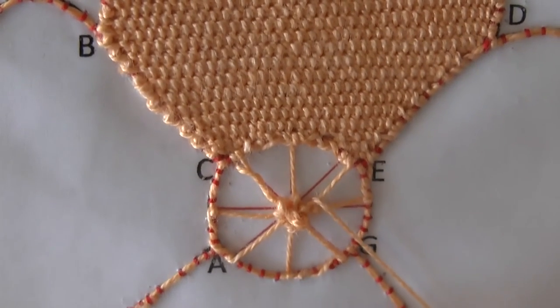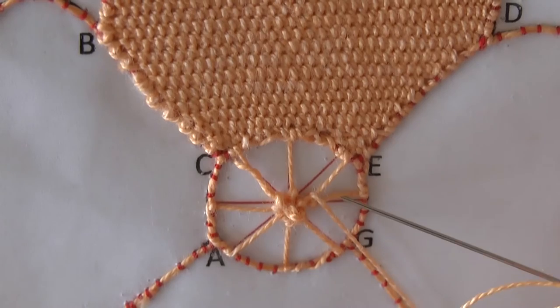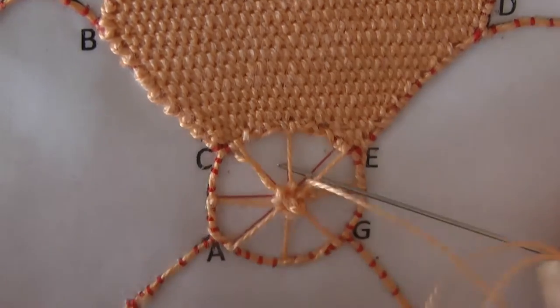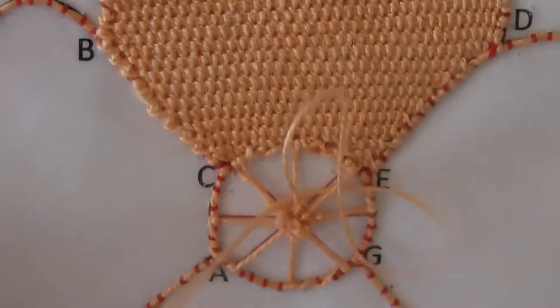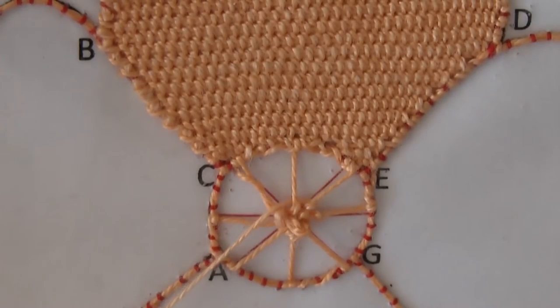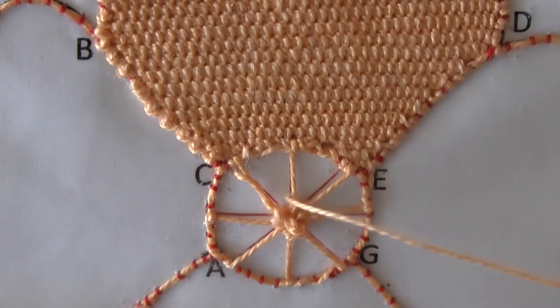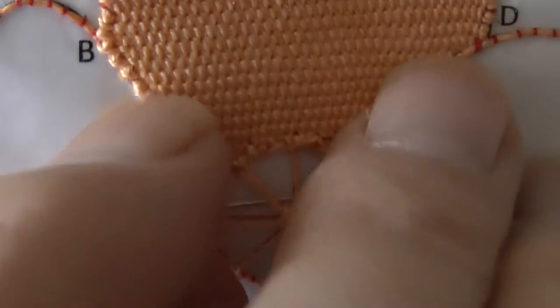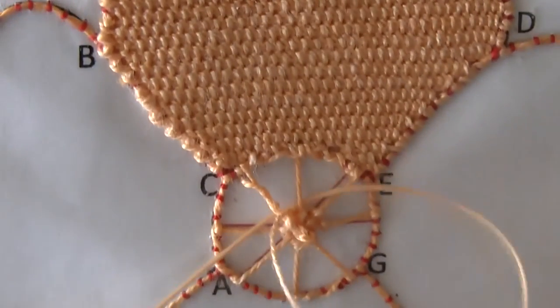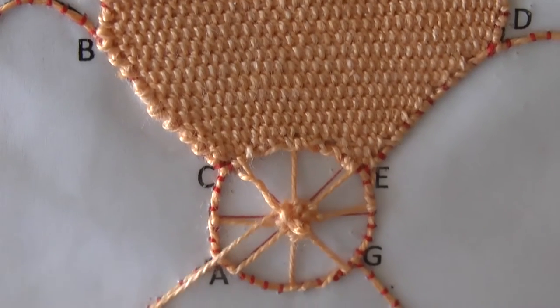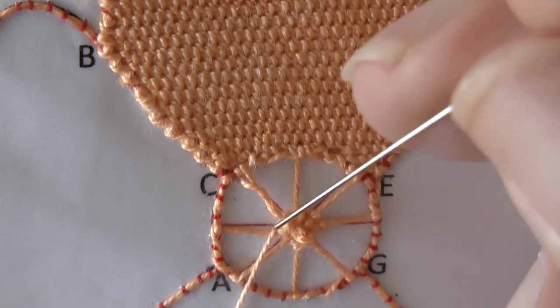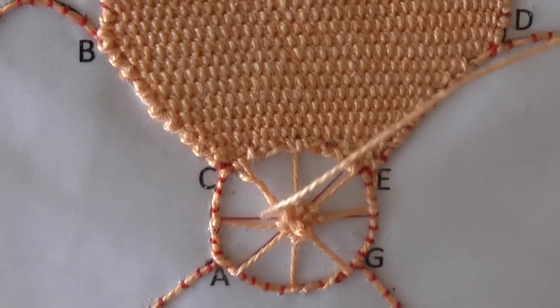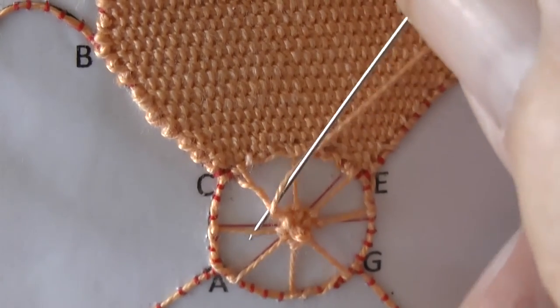Back one, under two, and just keep working around the circle. Back one, under two. Keep working around the circle in this fashion. Back one, under two.